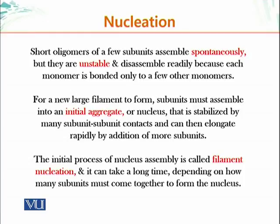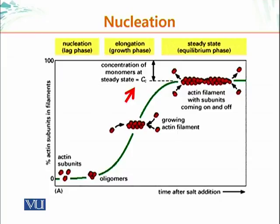For a new large filament to form, subunits must assemble into an initial aggregate. A few monomers come together, forming a seed. That small aggregate acts as a seed, and once new monomers start adding on, a filament forms. The nucleus — stabilized by many subunit-subunit contacts — can then elongate rapidly by addition of more subunits. The critical part of this process is the initial nucleation step, which can take quite a bit of time due to thermal energy causing subunits to come together and then dissociate.